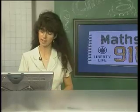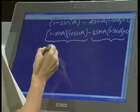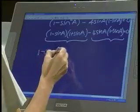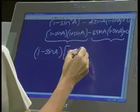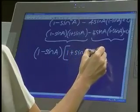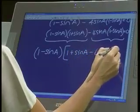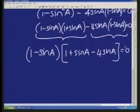What's common in those two terms? There's a bracket that's common, so let's factorize. Let's take out the 1 minus sine a, and what are we left with: 1 plus sine a from the first term, and the second term minus 4 sine a, equals 0.